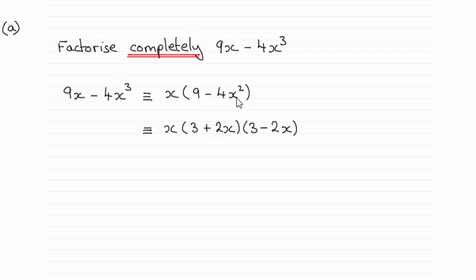This is the difference of two squares, which you should be familiar with. 9 is the square of 3 and 4x squared is the square of 2x. So we put those values into two brackets — the 3 and the 2x — and then we switch the signs: a plus and a minus, or a minus and a plus; it doesn't matter.